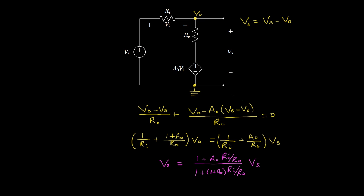Now we need to know something about the values A0, Ri, and R0. For operational amplifiers two things are true. First, the gain A0 is much, much bigger than 1 — it could be 10,000, 20,000, 50,000, 100,000, or even hundreds of thousands. Second, the ratio of Ri to R0 is also much larger than 1. When both of these are true, the ones in the expression don't matter, and the ratio simplifies to 1, so the output voltage VO is just equal to the input voltage VS.